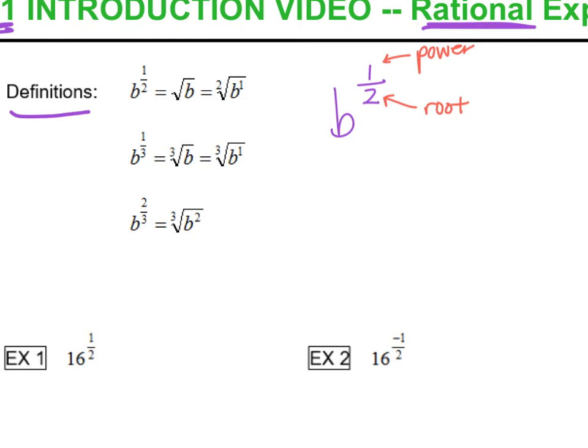You also could write that, another way you might see this is the cube root of b squared. So that squared could go on the outside of parentheses, or it could go underneath the radical. So you've got your power over your root.